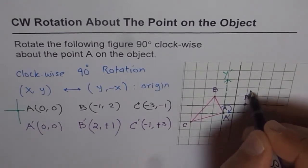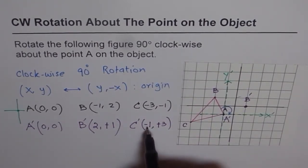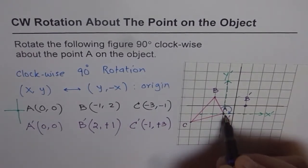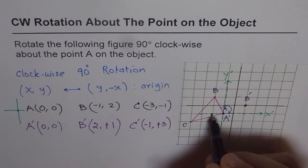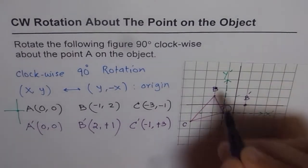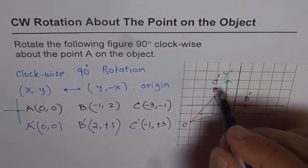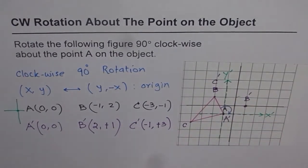We label that point B'. C' = (−1, +3), so we go one unit to the left of A and then 3 units up. That is where we get C'. These are our image points — let me now draw the transformed triangle in a different color.